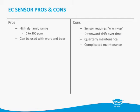Electrochemical sensors have some advantages over optical sensors, though they are much harder to maintain and do have downward drift, which causes complications. They have an incredibly high dynamic range — one sensor can go from 0 to 200 ppm with just a couple of parts per billion of uncertainty on the low end and maybe a percent on the high end, making them great for wort and beer. The cons are that instruments require warm-up time, downward drift can give a false sense of security, and maintenance is complicated and must be done much more frequently than with an optical sensor.